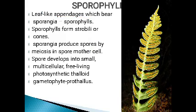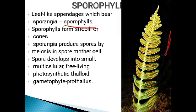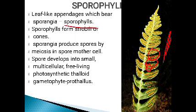In the sporophytic generation, these plants bear leaf-like appendages called sporophylls. 'Phyll' means leaf, so sporophylls are spore-bearing leaf-like outgrowths. On the sporophylls you can see small round structures called sporangia, and inside the sporangia the spores are formed and released.